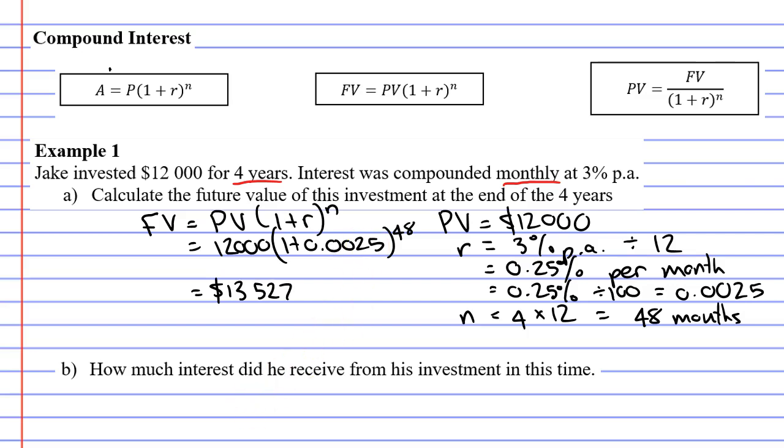$13,527 and 94 cents. We'll round it to the nearest cent, as you do when you work with money.